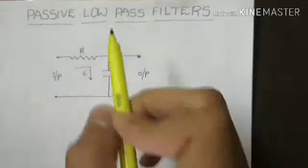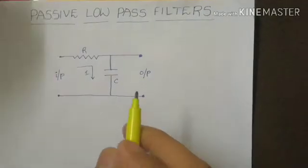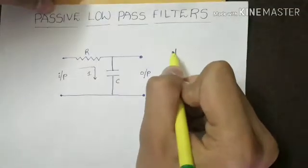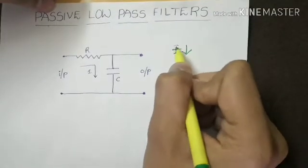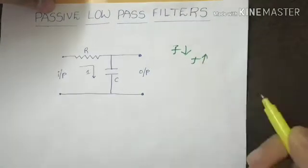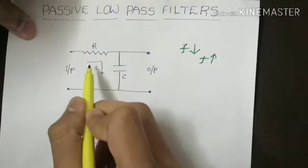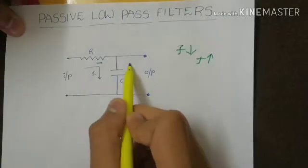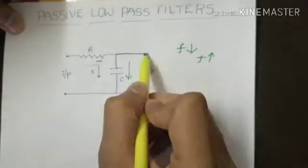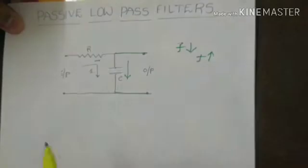And now in this low-pass filter, it should allow only signals of low frequencies and stop input of high frequencies. Now in this circuit, this resistor and capacitor are connected in series and output is taken across this capacitor.